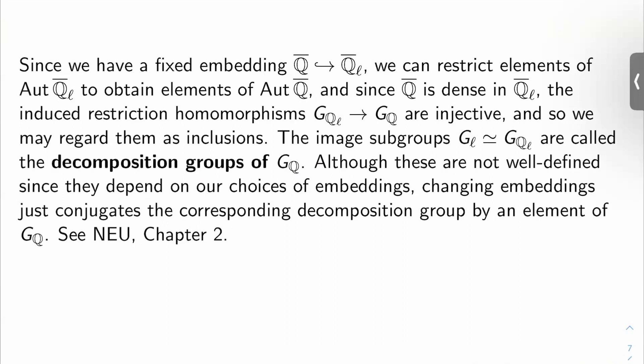Look, everything we've defined so far depends on the choices of embeddings we made earlier. So these are not really well-defined objects, but it turns out they're kind of well-defined up to conjugacy. If you change embeddings, this just conjugates the corresponding decomposition group by an element of the absolute Galois group. And this is all talked about in Neukirch.